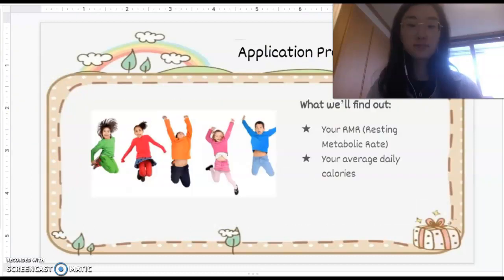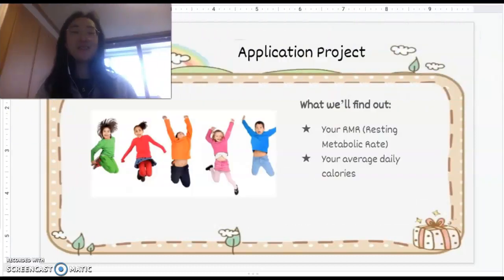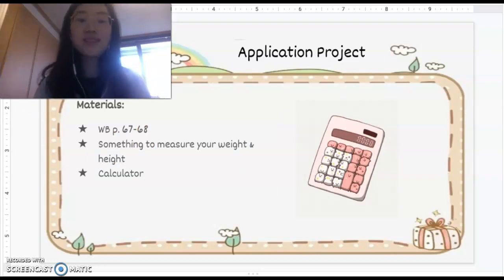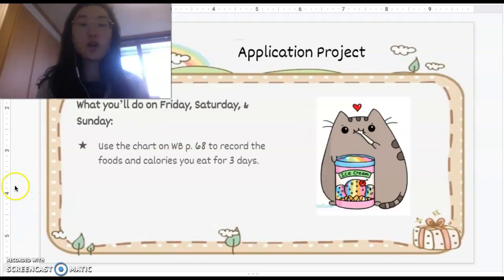Let me go ahead and explain this for you. So you're going to be finding out your RMR, which is the amount of calories you need, and your average daily calories, so how many calories you usually eat every single day. Those are the two things we're going to be calculating today and next week and this weekend. So the materials, again, you'll need your workbook pages 67 to 68, you need to know your weight and your height, and you'll need a calculator.